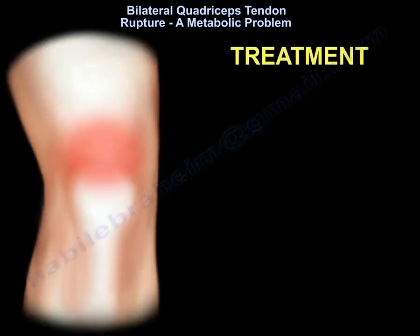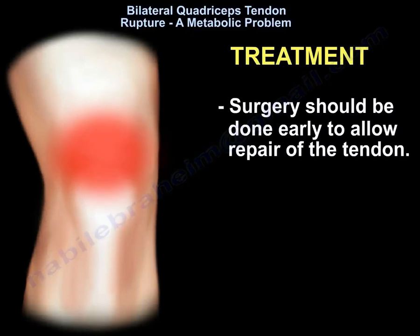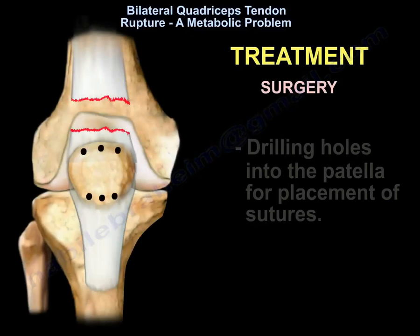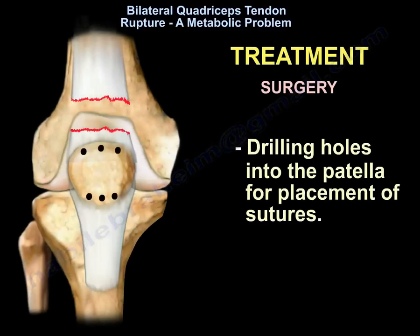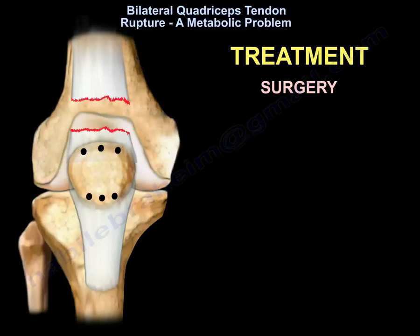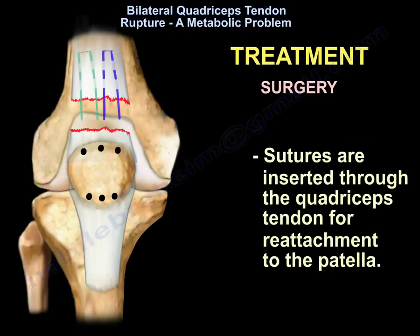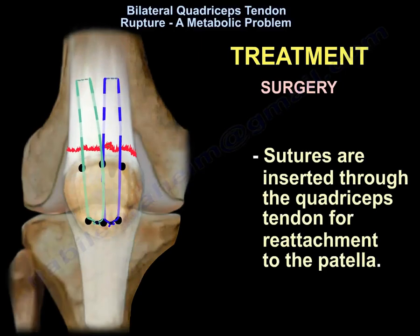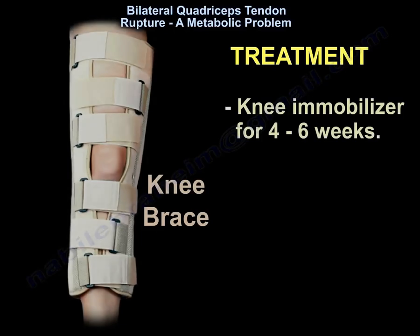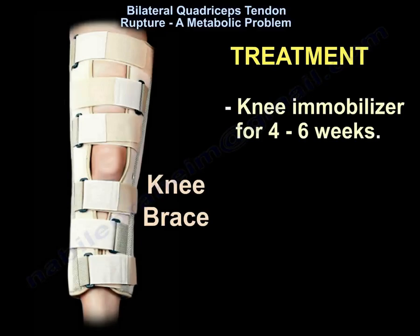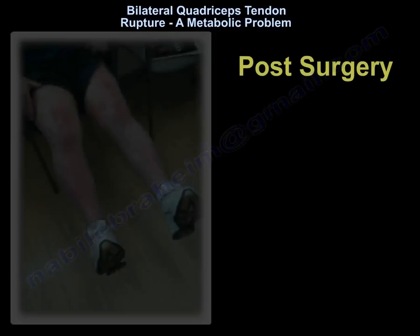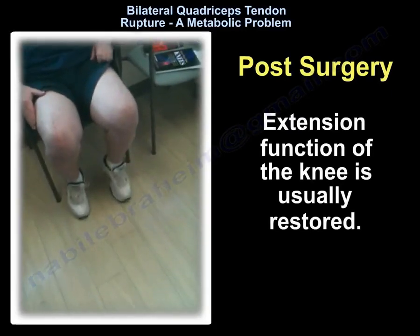Treatment: surgery should be done early to allow repair of the tendon. We drill holes into the patella for placement of sutures, and the sutures are inserted through the quadriceps tendon for reattachment to the patella. A knee immobilizer is used for 4 to 6 weeks post-surgery, and the extension function of the knee is usually restored.